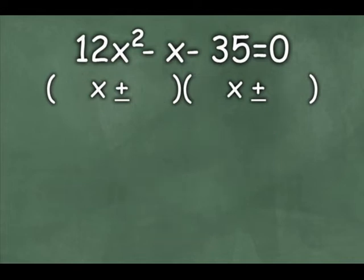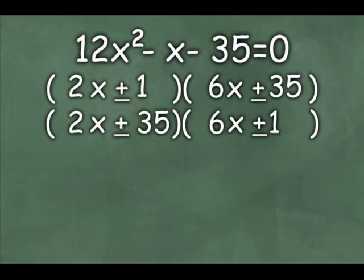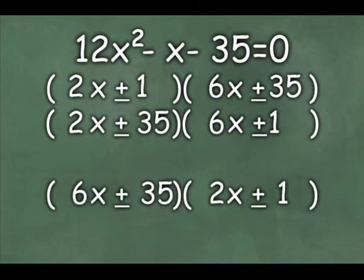Now, I'd like to talk a little bit about how you can narrow down some of these possibilities. Consider, if we did 2x and 6x, that would multiply to 12x squared. And 1 and 35, that would multiply to 35. So this could be a possible solution. Now, if I switch the 35 and the 1, that's a completely different solution that's also possible. However, if I also switch the 2x and the 6x, do you see how that is the same solution as the first solution?